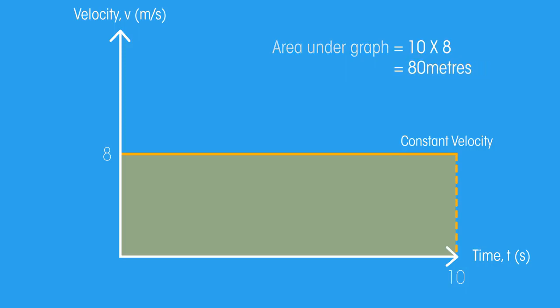The area underneath the graph gives us the total distance that the object has travelled. So we have velocity, time and distance.